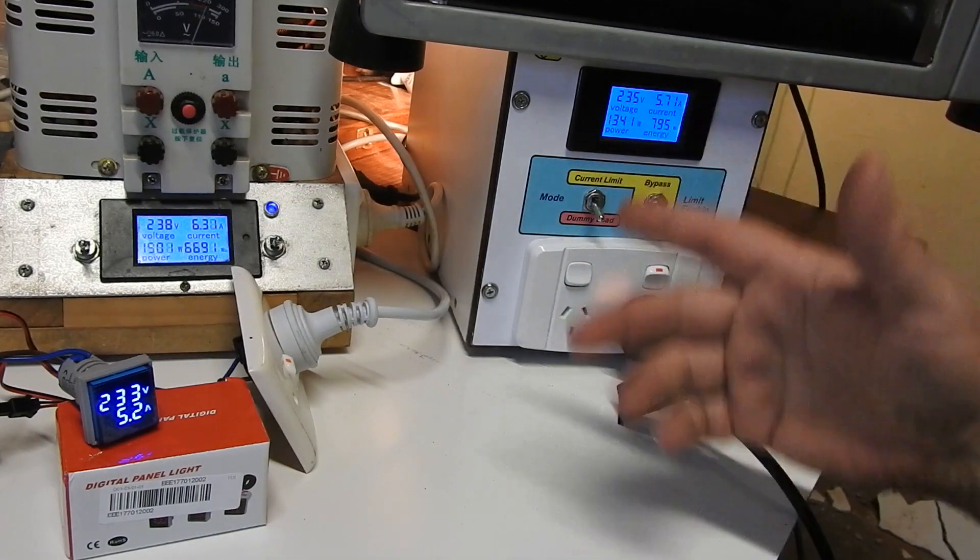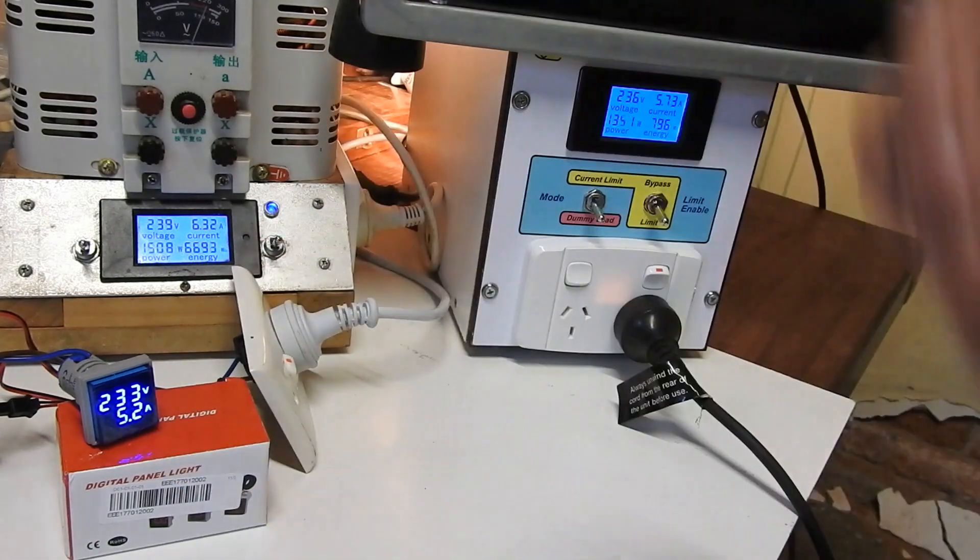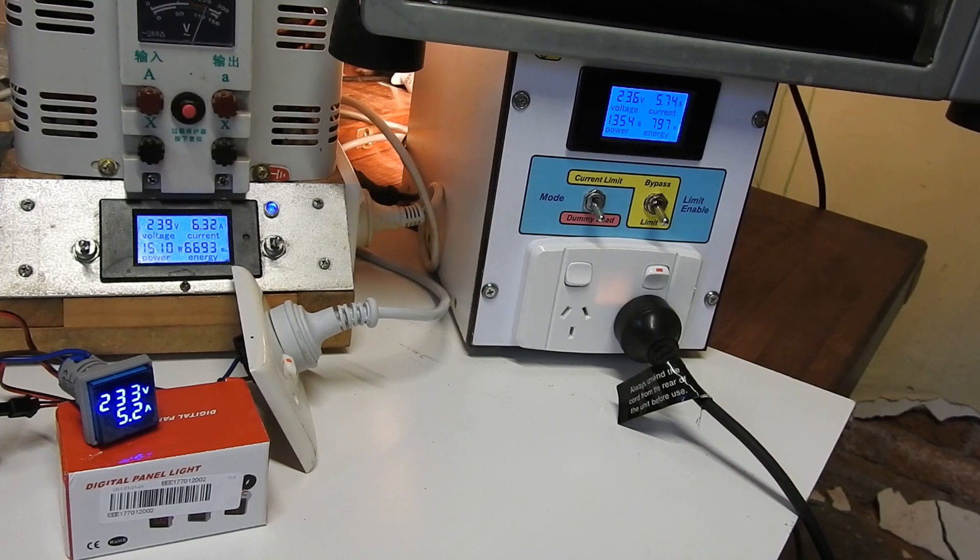1500 watts, 1300 watts. 5.7 amps, 6.3 amps, 5.2 amps. Which one do you believe? I'll have to come up with a definitive measurement. Get a resistor, measure it accurately, and then watch the voltage drop across it with a true RMS meter to get an accurate idea of current. So I can work out which one of these is wrong.